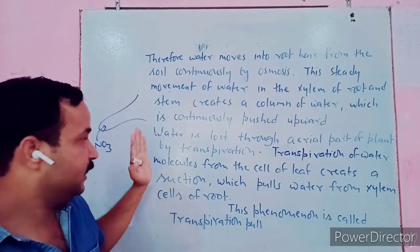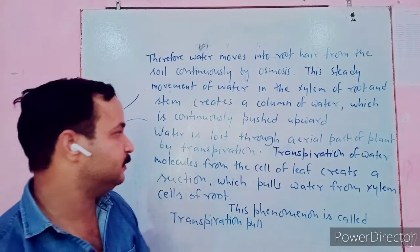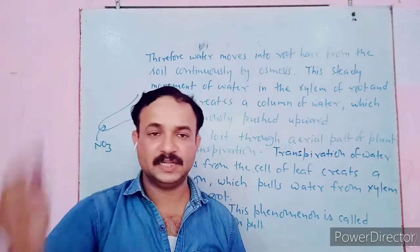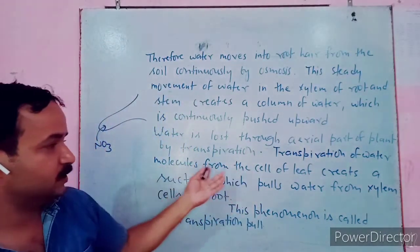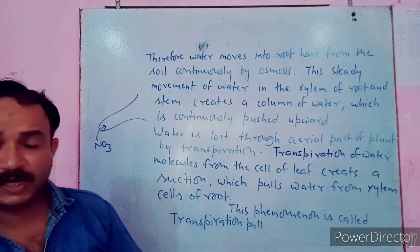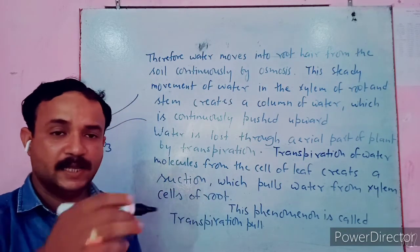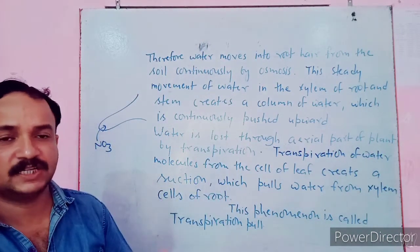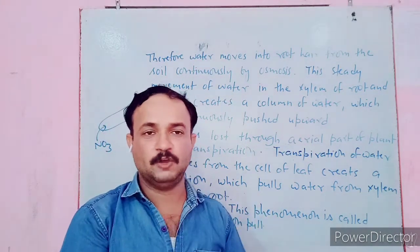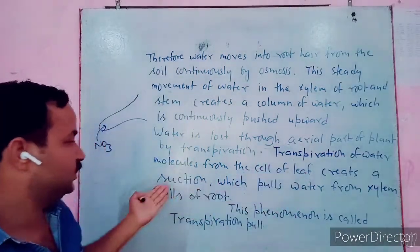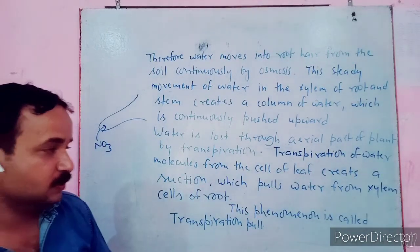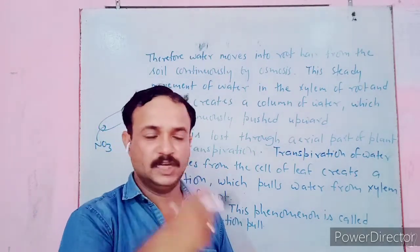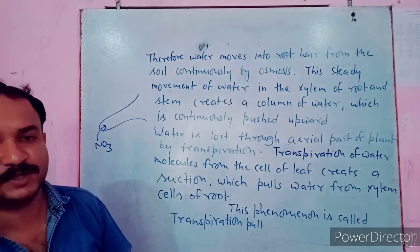Water is also lost from the aerial parts of the plant by transpiration through the leaves. The evaporation of water molecules from the cells of leaves creates a suction, which pulls water from the xylem cells of the root upward. This phenomenon is called the transpiration pull.